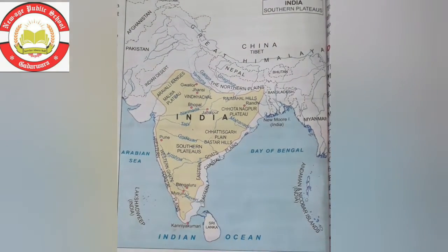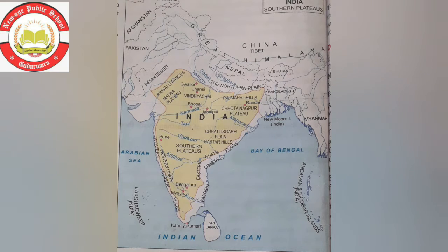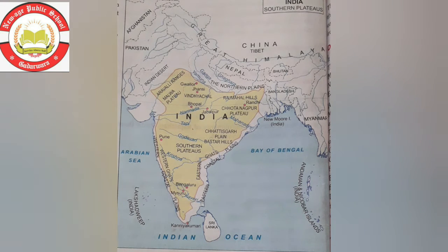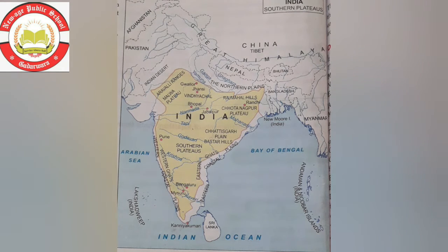Next is the Deccan Plateau. The Deccan Plateau lies across the Satpura mountains. It is bounded by the Western and Eastern Ghats. The rivers Mahanadi, Godavari, Krishna and Kaveri originate in this area. The Godavari river is called Dakshin Ganga. These rivers fall into the Bay of Bengal. India's highest waterfall is the Jog Falls on the Sharavathi river in Karnataka. Major dams include the Mettur Dam on the Kaveri, the Nagarjuna Sagar Dam on the Krishna, and the Hirakud Dam on the Mahanadi.